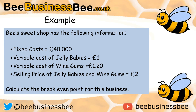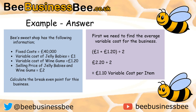However, to calculate the breakeven you are going to need to work out the average variable cost, because we have got £1 and £1.20. So £1 plus £1.20 gives us £2.20, and we have got 2 lots of information so we divide by 2, which gives us the average variable cost per item of £1.10.